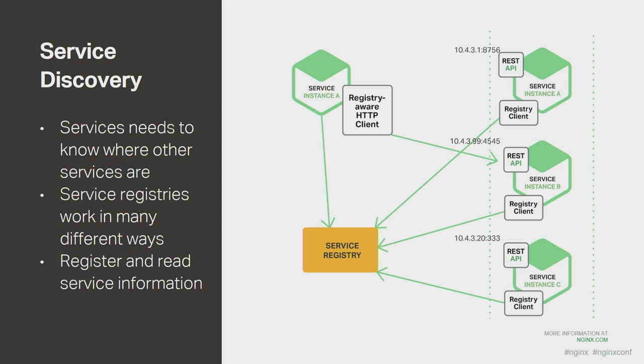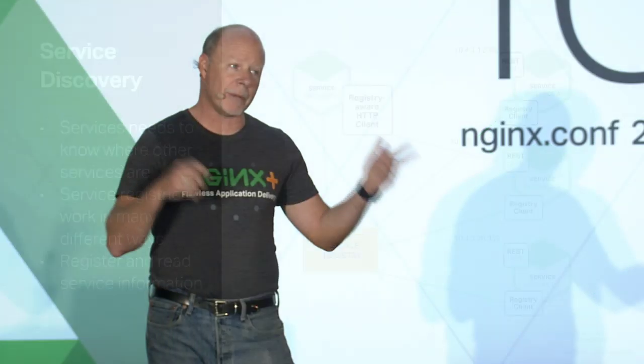Let's look at these in more depth. The service discovery problem: in the monolith, the app engine managed all the object relations — you never had to worry about where one object was versus another; you just made a method call and the VM connected you to the object instance. In microservices, you need to think about where those services are, and unfortunately it is not a universal process. The various service registries — whether Zookeeper, Consul, etcd, or whatever — all work in different ways. You need to register your services and be able to read where they are and connect to them.